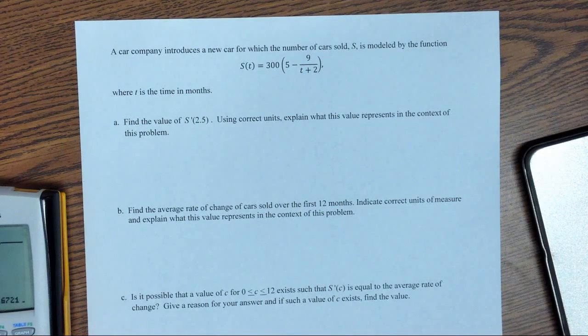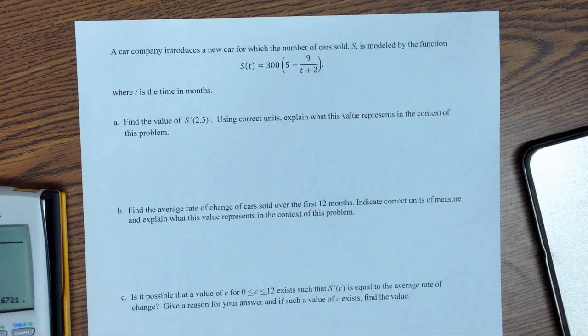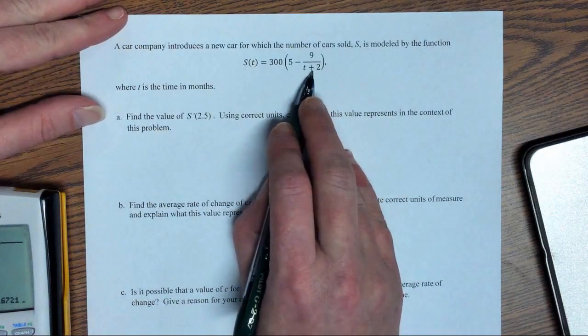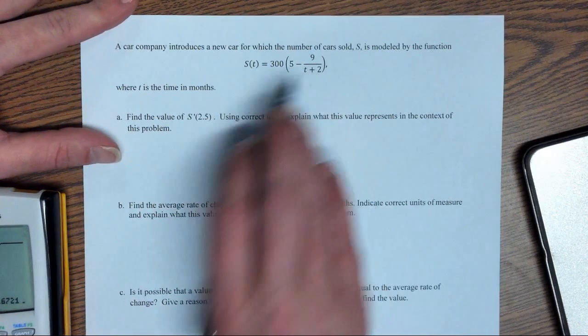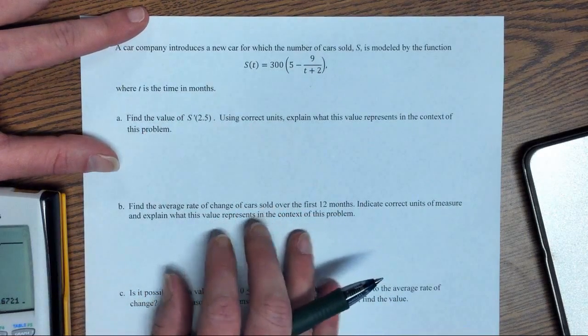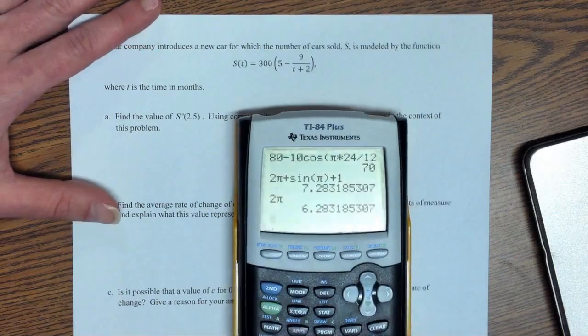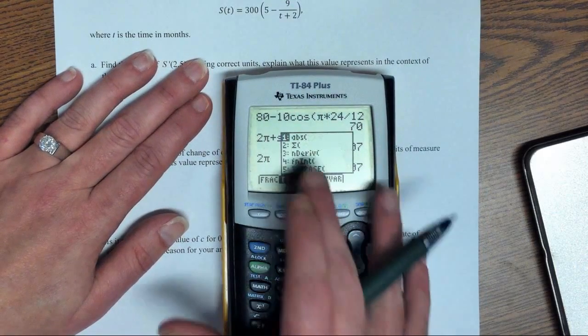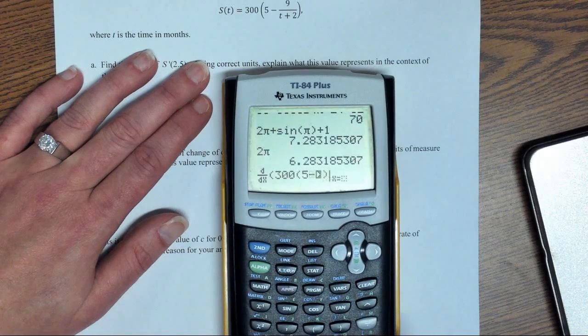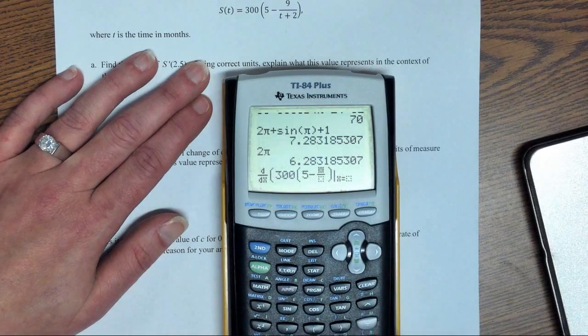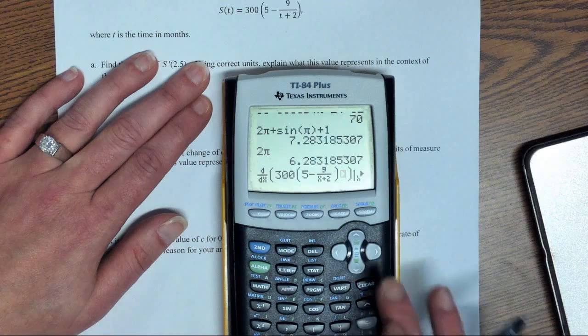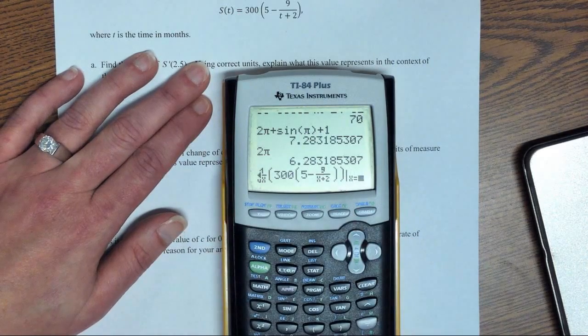The next one. A car company introduces a new car for which the number of cars sold is modeled by this function s at time t in months. Now, sometimes it's helpful to just make a note off to the side. I know that we are not continuous at negative 2. So we need to remember that. Find the value of s'(2.5). Now, since this is calculator portion, we can practice using the calculator to find that derivative. So derivative, second function, third option. We're going to just type in our function. So we need to close parentheses there. Close parentheses. Yeah. Okay. At 2.5.